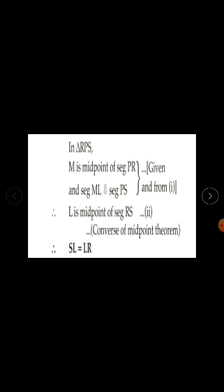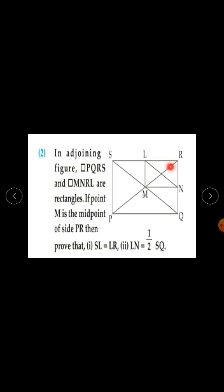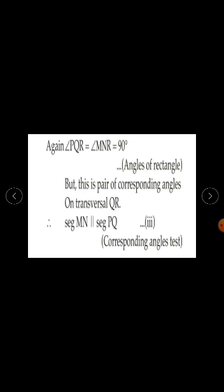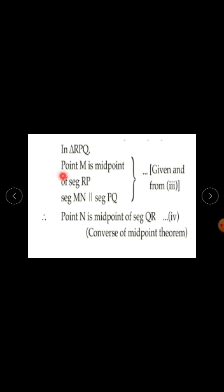In triangle RPQ, point M is the midpoint of segment RP — it is given. Segment MN is parallel to segment PQ from equation 3. Therefore, point N is the midpoint of segment QR by the converse of midpoint theorem. This is equation 4.